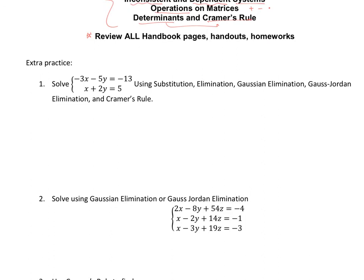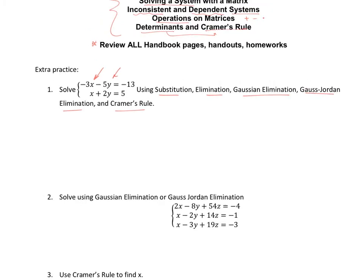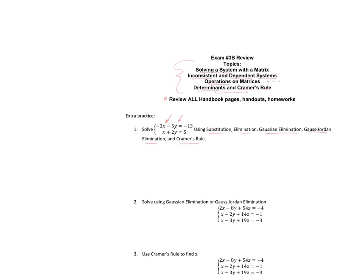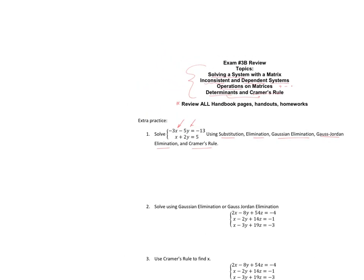The first thing we have is a little 2x2 system — two equations and two variables — and we need to solve it using five different methods. First, let's try substitution.